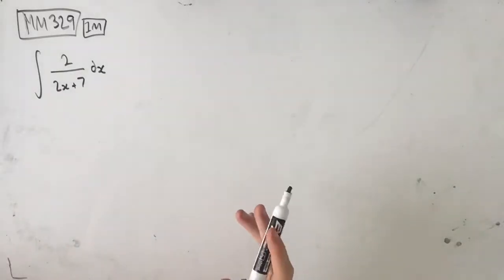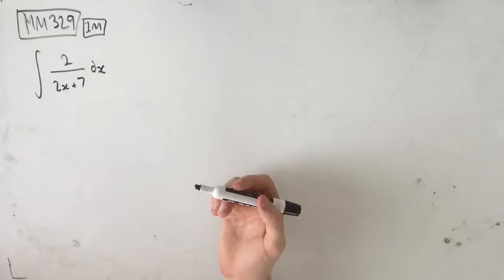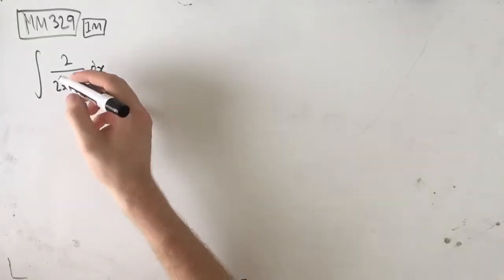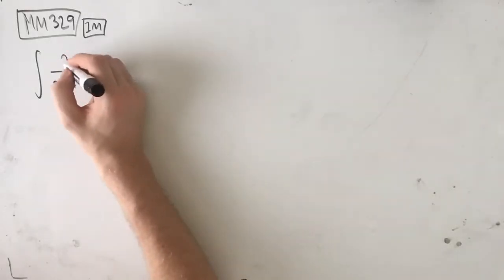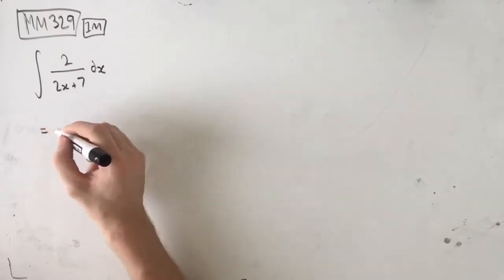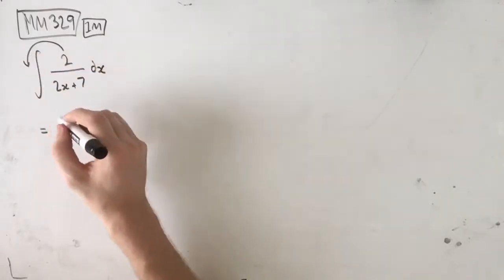This is just a one-mark question, so it should be pretty quick. What we need to do first is recognize that this 2 on the top here is a constant. So what we're going to do is actually take that 2 out the front.